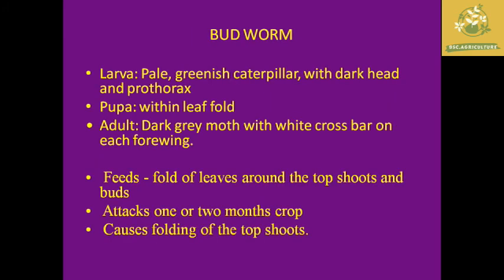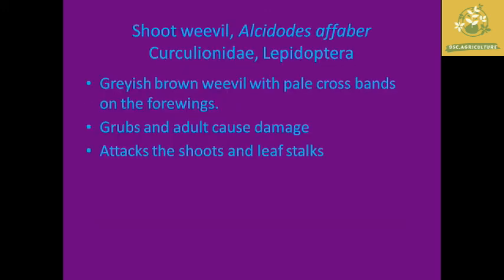The budworm larva is pale greenish in color; the pupa is found in a leaf fold and the adult is a dark-green moth. The major destructive stage is the larva, which folds leaves around top shoots and buds. They attack crops one to two months after sowing and cause dead heart on the top shoot.